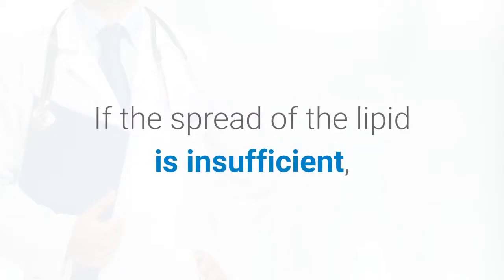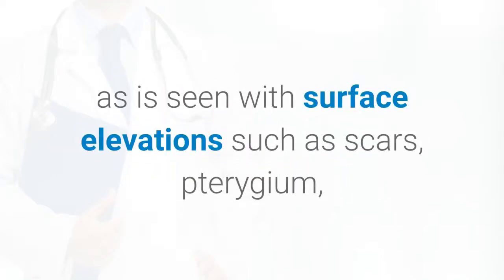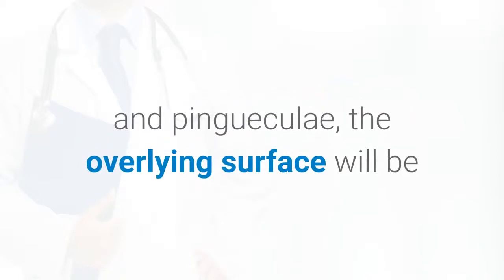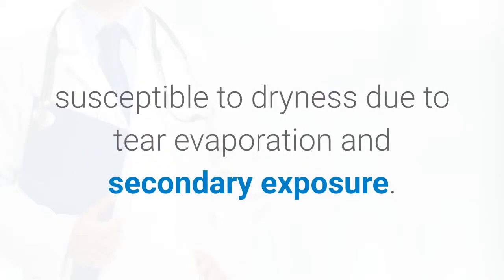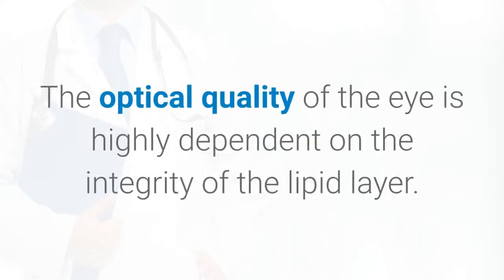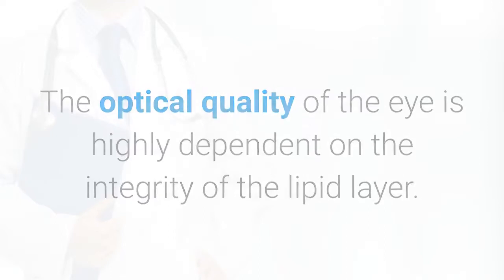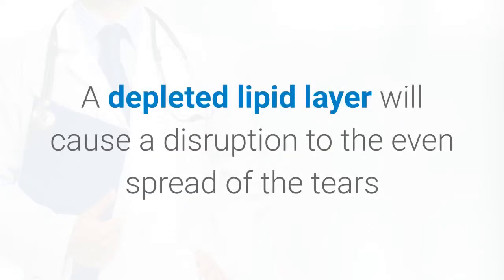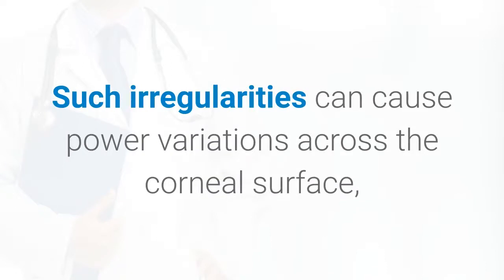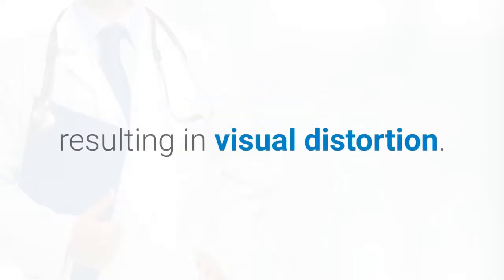If the spread of the lipid is insufficient, as is seen with surface elevations such as scars, pterygium, and pingueculi, the overlying surface will be susceptible to dryness due to tear evaporation and secondary exposure. The optical quality of the eye is highly dependent on the integrity of the lipid layer. A depleted lipid layer will cause a disruption to the even spread of the tears and cause an irregularity in the precorneal surface. Such irregularities can cause power variations across the corneal surface, resulting in visual distortion.